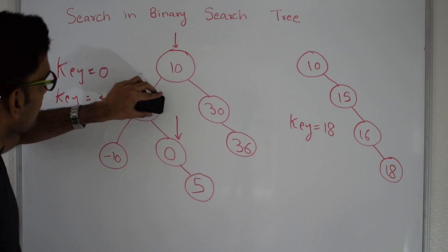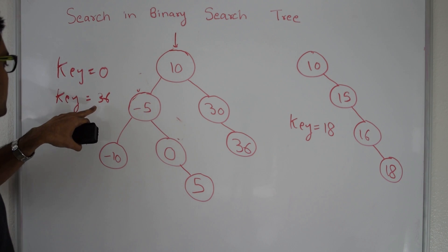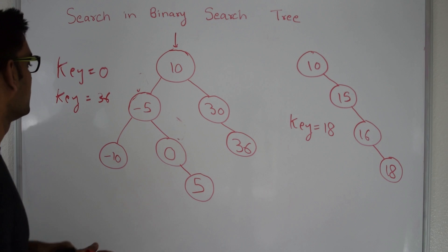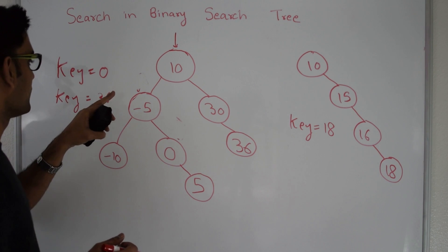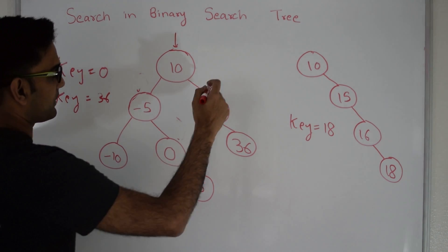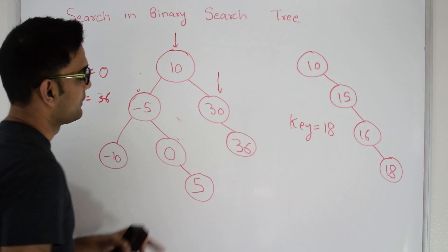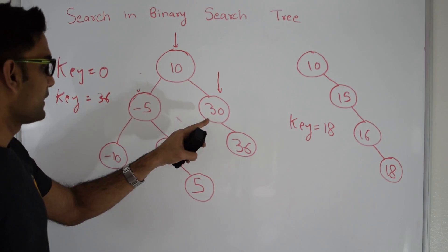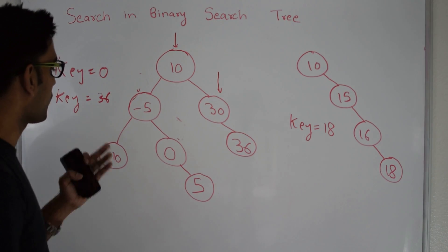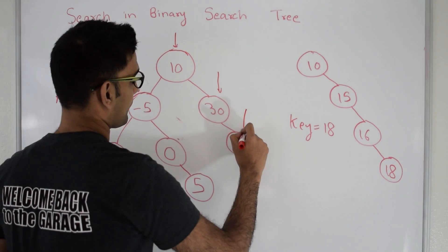Again we start from 10. We see that the key is not same as 10, so we check that 36 is greater than 10, so we come to the right child. Now here again 30 is not same as 36, and also 36 is greater than 30, so we go on the right again.